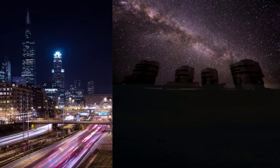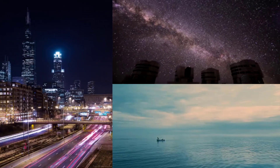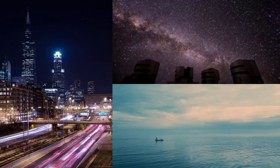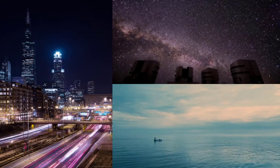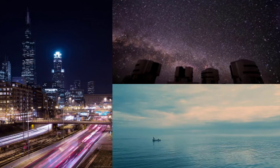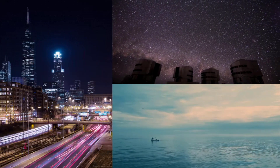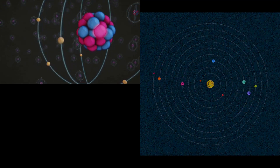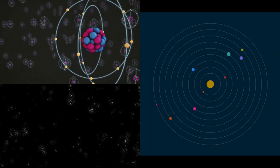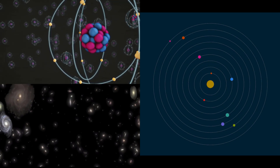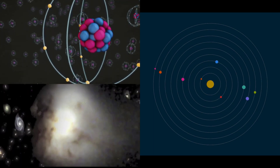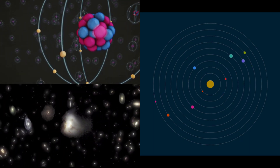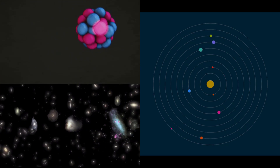Motion is universal — we encounter objects moving all the time in our everyday lives. Therefore it is vital that physicists be able to observe and measure the motion of objects. Physicists study all objects, from very small subatomic particles that make up everything to the planets as they move around the sun and even our ever-expanding universe itself. Studying the motion of these objects gives us important information about the universe we live in.